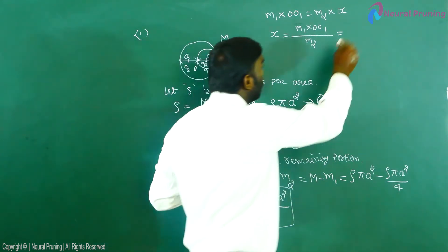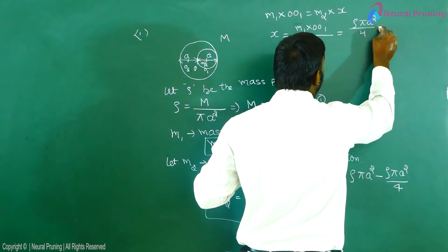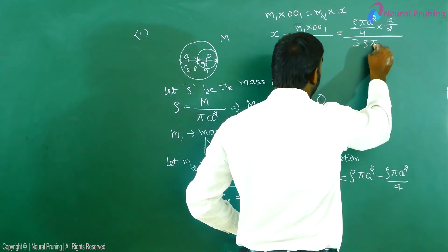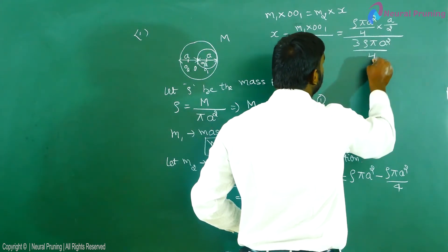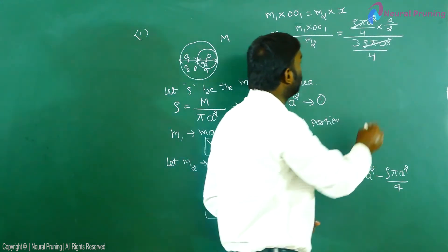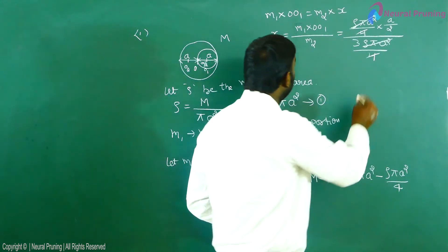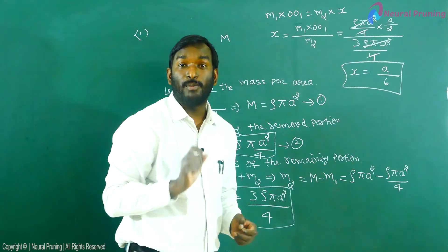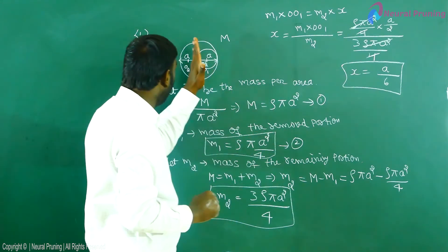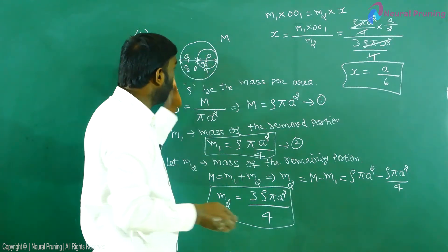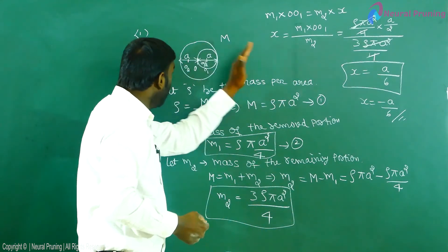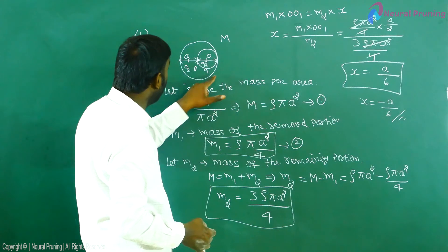So x = m1 × OO1 / m2. Substituting all values: m1 = ρπa²/4, OO1 = a/2, and m2 = 3ρπa²/4. Cancelling ρπa² from numerator and denominator, and simplifying, x = a/6. So the position of center of mass of the remaining portion is a/6 from the origin. With proper sign convention, x = −a/6, meaning after removing the portion, the center of mass shifts to −a/6.